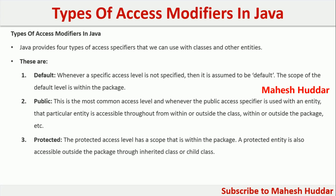The third one is the protected access specifier. Whenever we define an entity with the protected access level, it is accessible within a package, similar to the default access level. But if you want to access this particular entity outside the package, you can access it with the help of inheritance — you need to inherit a particular class in another package and then you can access that entity.